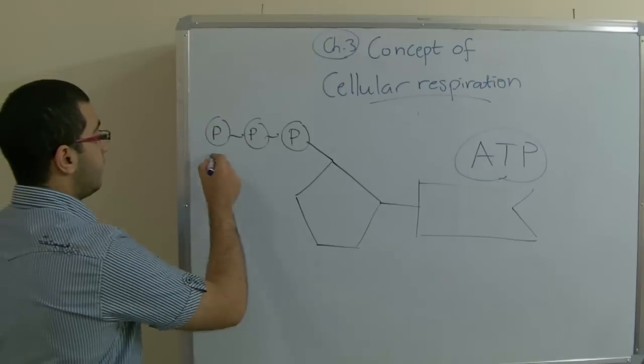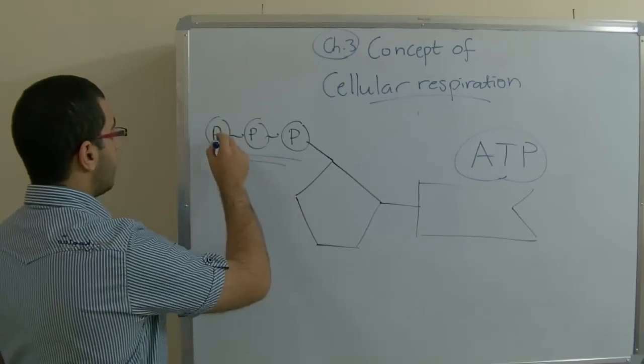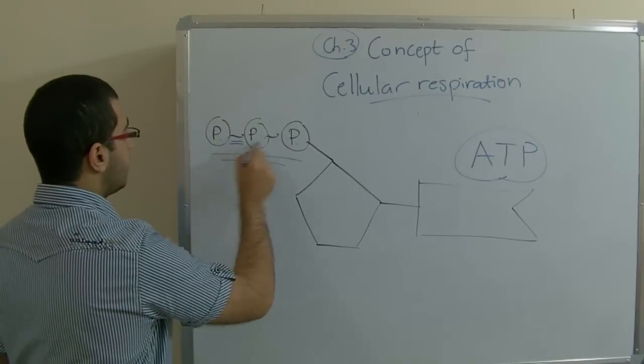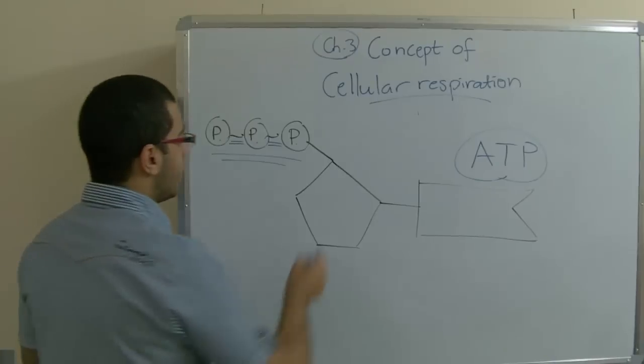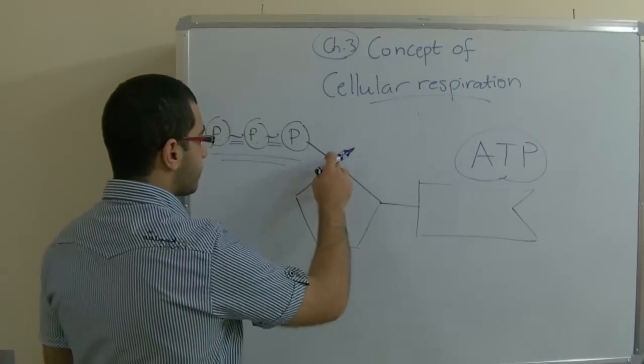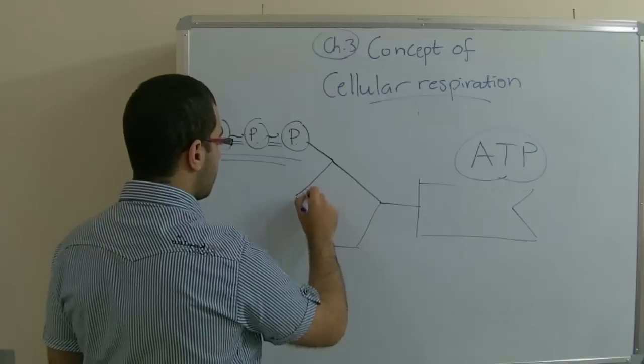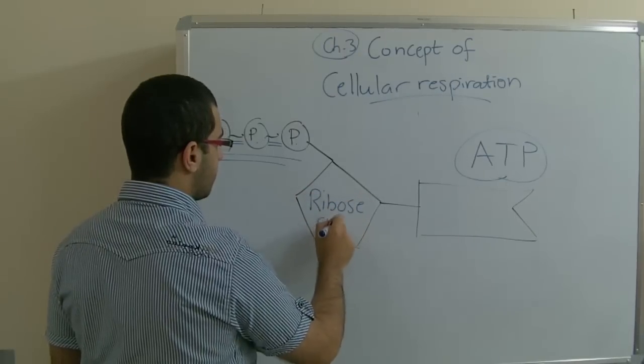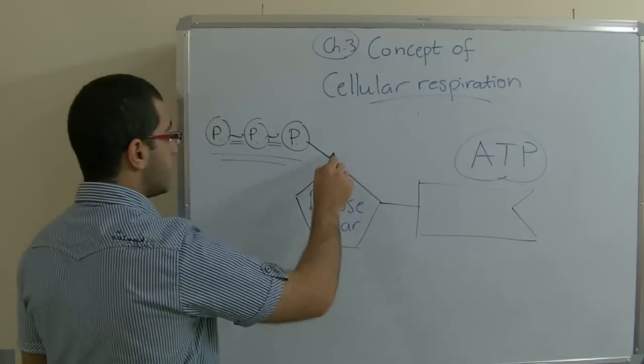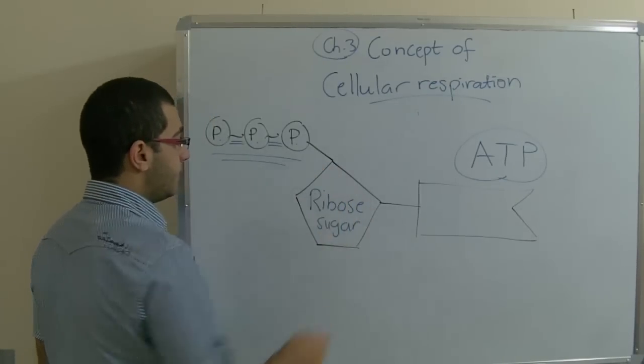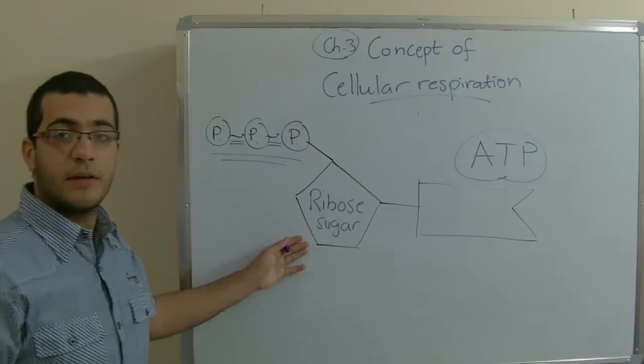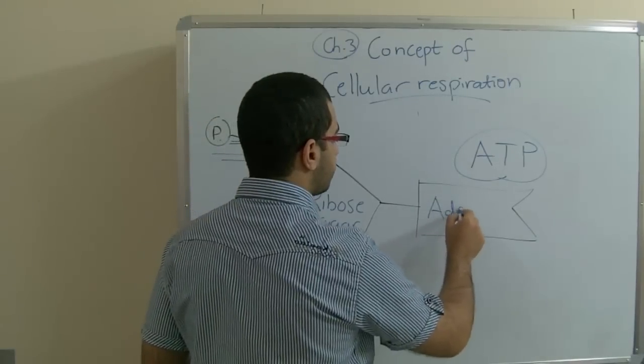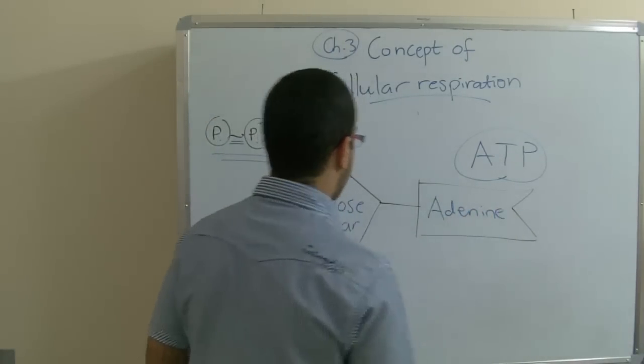This is the phosphate groups. One, two, three. There are the three phosphate groups binded by two high energy bonds. They are attached to the ribose sugar. And as you can see it has the shape of a pentagon and this is why it's called 5-carbon pentose sugar. And here we have the nitrogenous base.